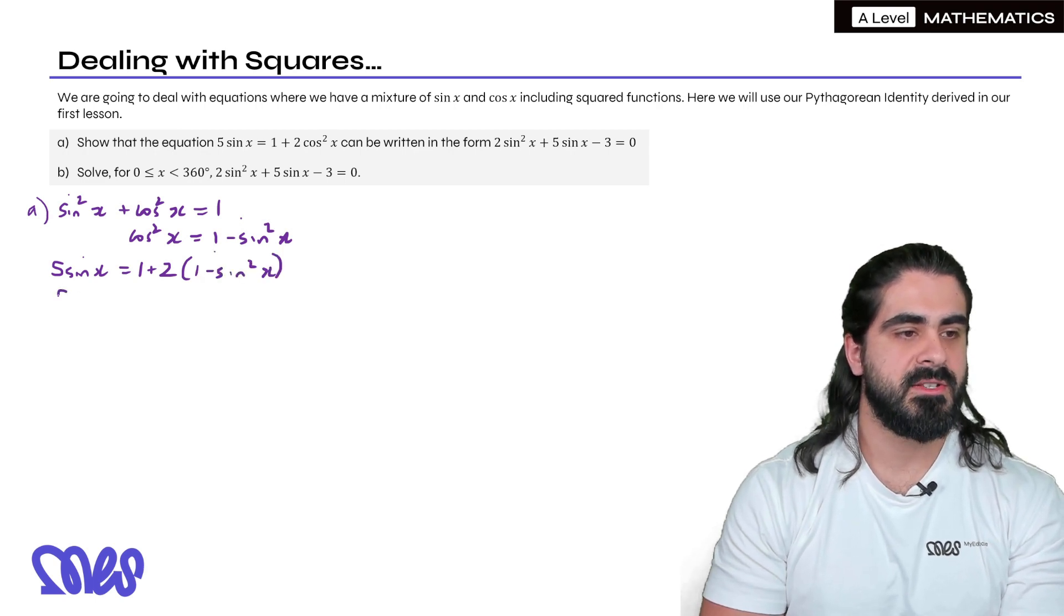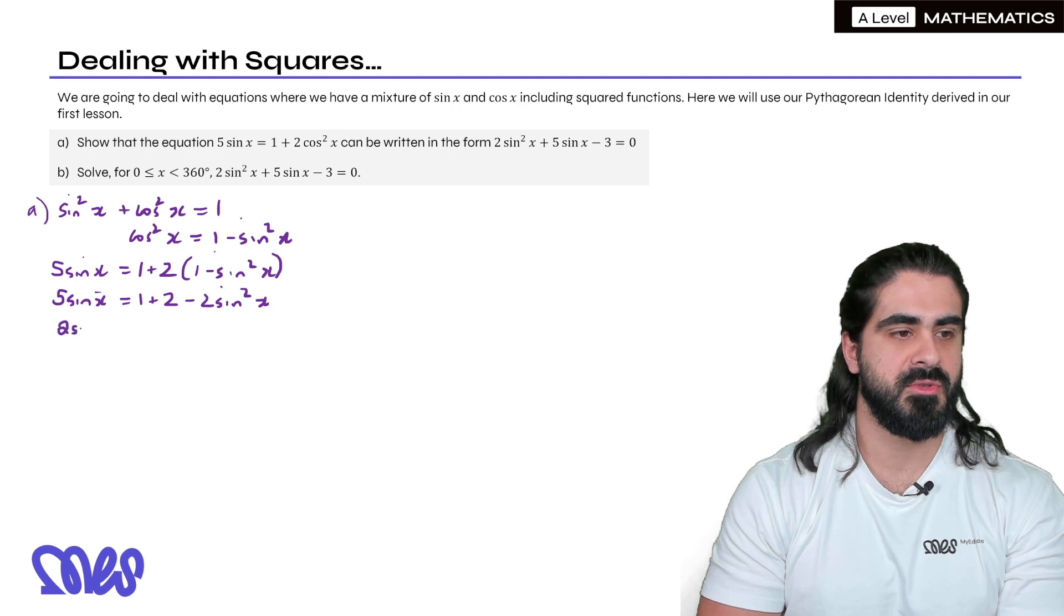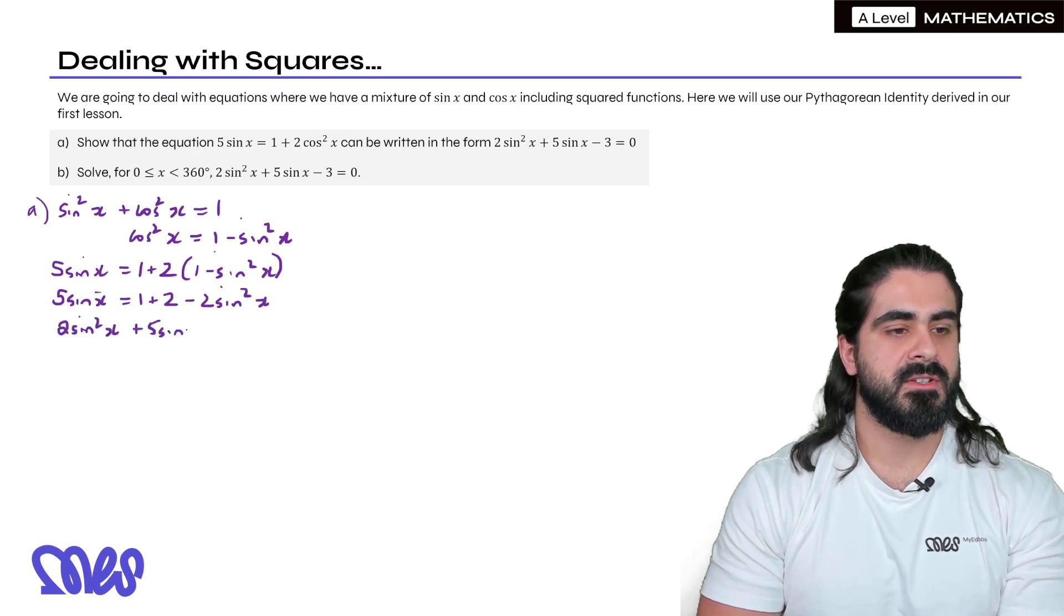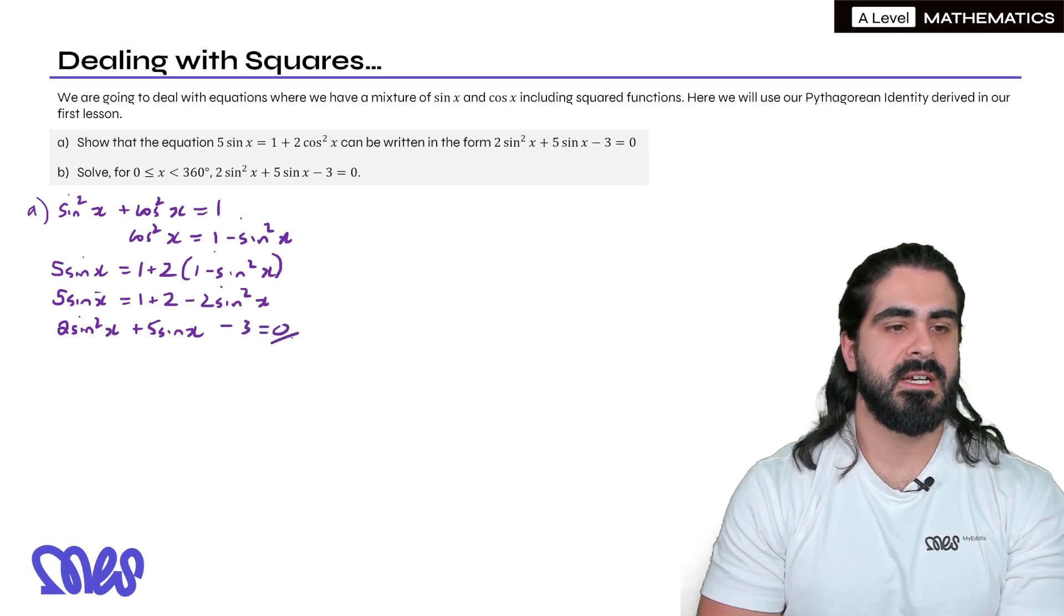Then we're going to expand, then that gives us 3. We're also going to move everything on the right side over to the left side. So minus 2 sine squared will become 2 sine squared, then we have plus 5 sine x. Then we have 3 here, we'll move it to the other side, it's minus 3 equals 0. And that's now shown.